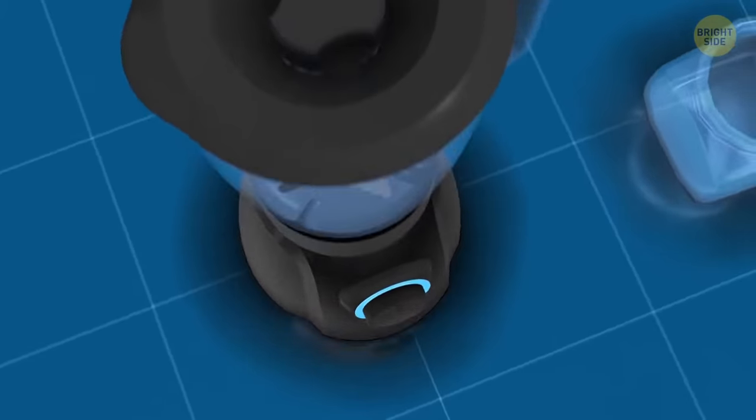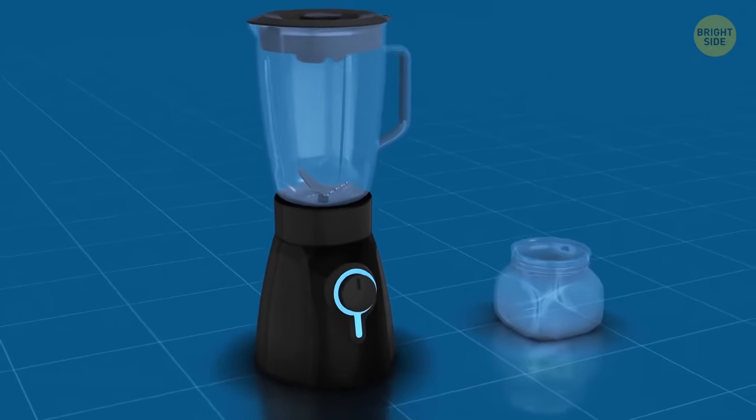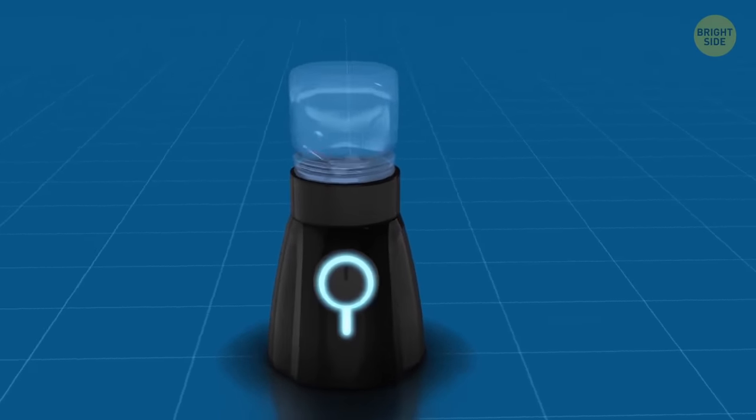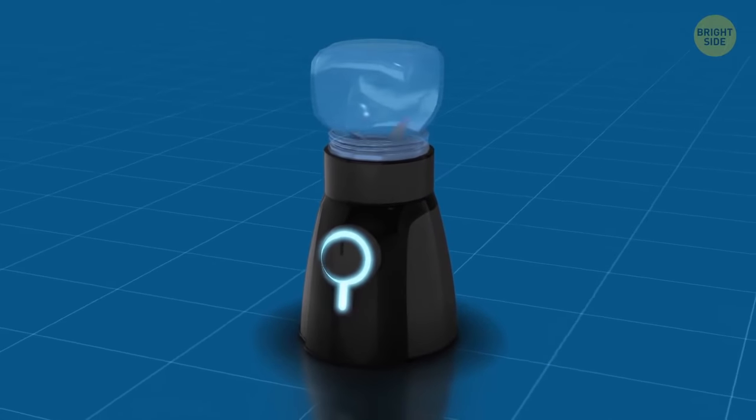You can use a mason jar directly onto the blender with a screw on top and make any shake you want without having to wash the blender jar. The only rule is to not put your device on max.